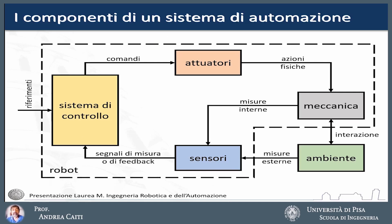In the graduate degree in Robotics and Automation Engineering, we learn to analyze and design all the blocks that compose an automation system, and above all, the connections that unite them — how they must be connected and what are the effects of different types of connections.